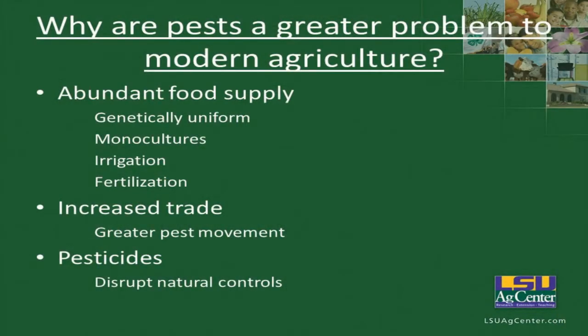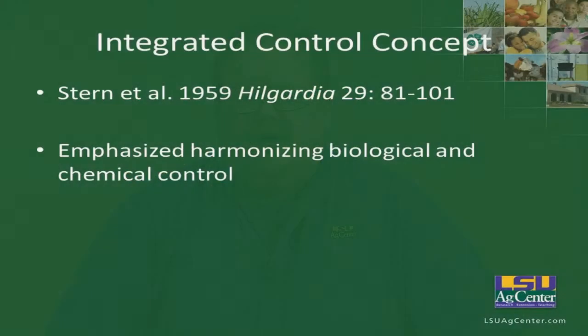Pesticides, which we need to use to control pest problems, actually disrupt natural enemies and natural controls. It was from this concern — the abundant food supply and pesticide use — that the integrated control concept was started.